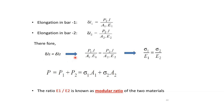Since delta L1 equals delta L2, we equate the two formulas: P1 times L divided by (A1 times E1) equals P2 times L divided by (A2 times E2). After cancelling the common length L, and substituting sigma 1 equals P1/A1 and sigma 2 equals P2/A2, we obtain the relation: sigma 1 divided by E1 equals sigma 2 divided by E2.